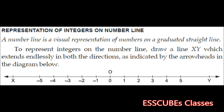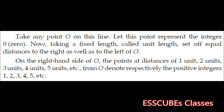Let us now discuss the representation of integers on a number line. What is a number line? A number line is a visual representation of numbers on a graduated straight line. To represent integers on the number line, we need to draw a line — say XY — which extends endlessly in both directions with arrow heads. Take any point O on this line and let this point represent the integer 0.